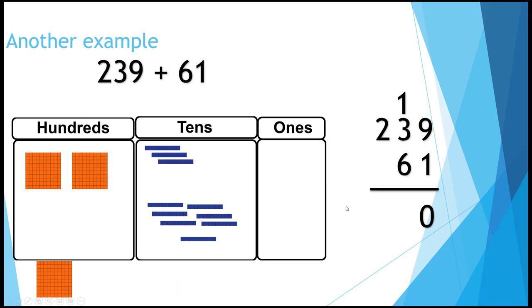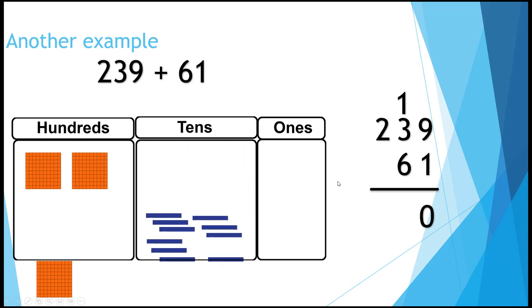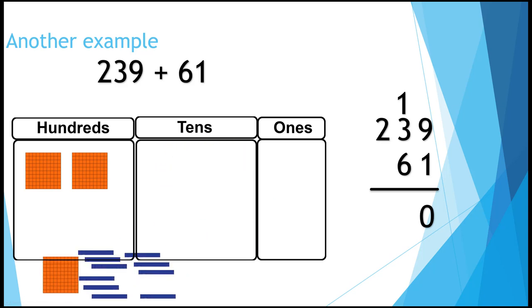Then we get to the tens. And we have 10 tens, too many to fit in the tens column. So we need to swap them out. The number bars now say we have exactly 300.